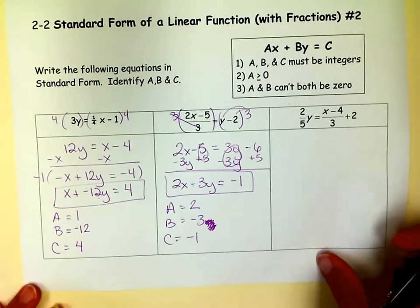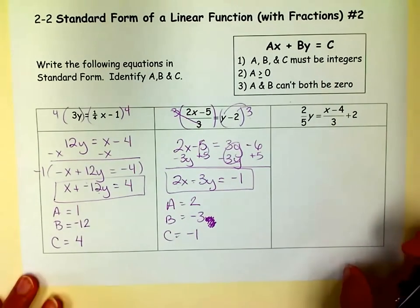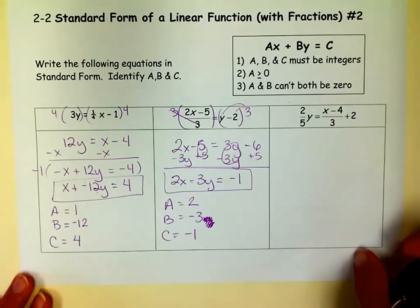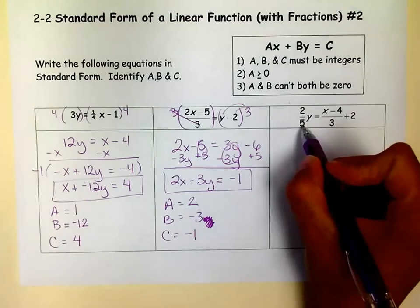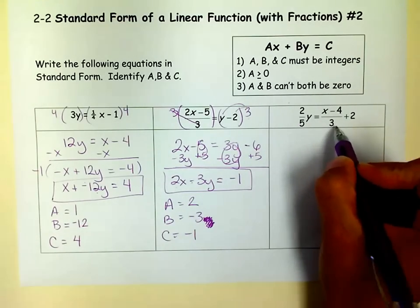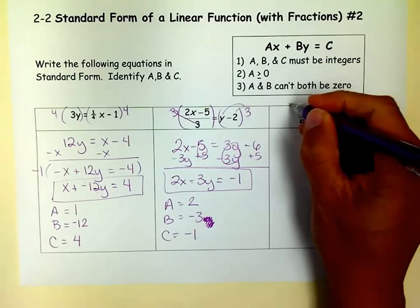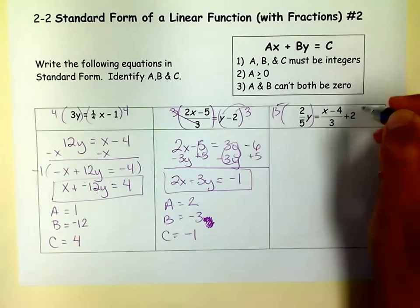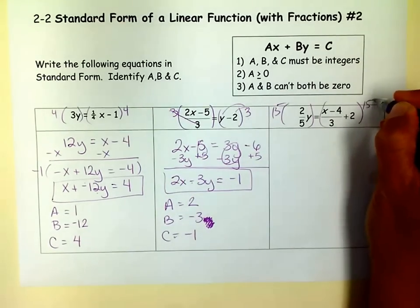Okay. In this one, we have two fractions. So we have two denominators. So our common denominator, there's nothing. These are both prime numbers. So we just multiply them together. Because there's nothing that they have in common. And so we're going to multiply this by 15. And this side by 15.